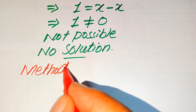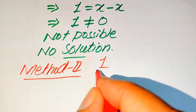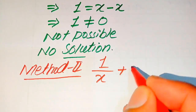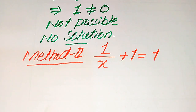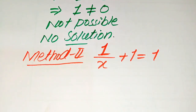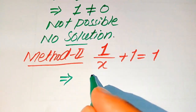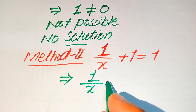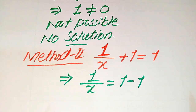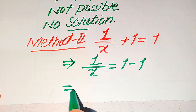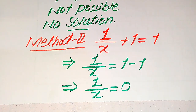In the second method, the given equation is 1 divided by x plus 1 equals 1. We move plus 1 to the right-hand side: since it is plus 1 on the left, moving it to the right makes it minus 1, giving us 1 divided by x equals 1 minus 1, which equals 0.